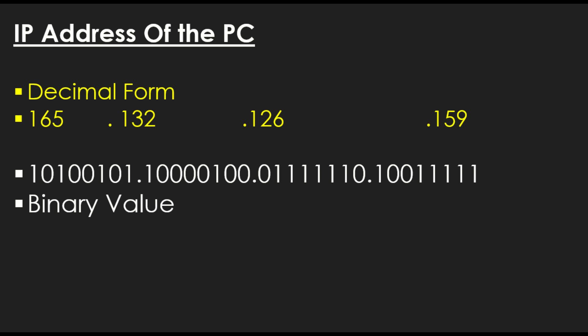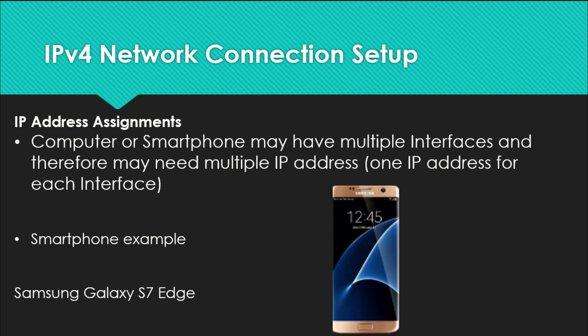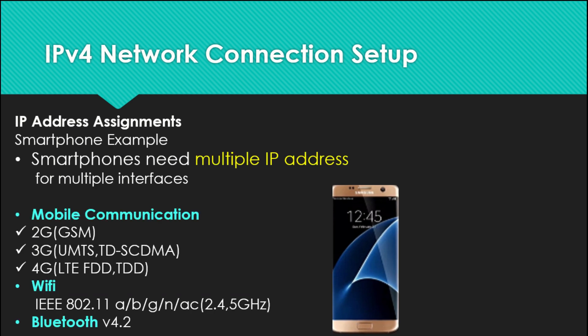IP addresses are assigned to each interface, and a computer or smartphone may have multiple interfaces and therefore will need multiple IP address assignments — basically one IP address for each interface is required. For example, let's look at a smartphone here, the Samsung Galaxy S7 Edge. This device has multiple interfaces: for mobile communication it has 2G, 3G, and 4G connections. For Wi-Fi it has IEEE 802.11a/b/g/n/ac modes supporting 2.4 and 5 GHz frequency ranges, in addition to Bluetooth 4.2. Each of those interfaces needs a separate IP address, which is why a single device can consume a lot of IP addresses to support all of its connectivity.